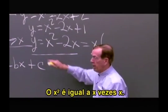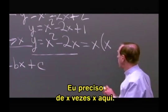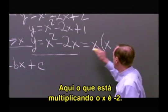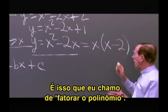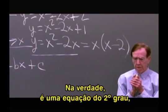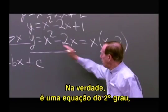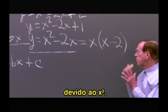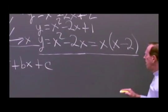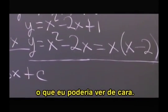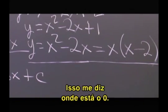What's the remaining thing? That x squared, of course, means x times x, so I need an x times an x there. And here I have minus 2 times x. That's what I would call factoring that polynomial — a quadratic, because it's got that square in it. And this tells me where the zeros are.